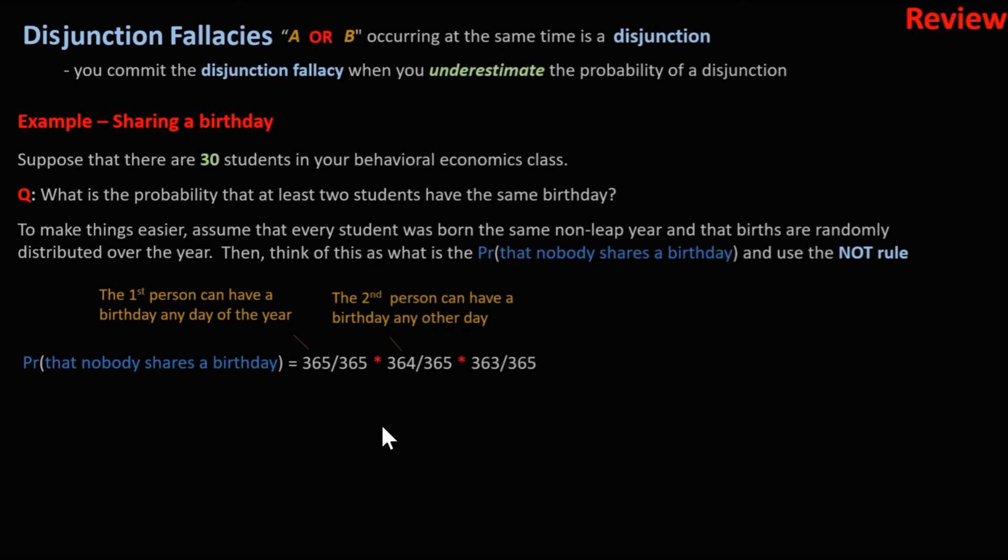they could be born on 363 days, those are the remaining days they could be born on so they don't share a birthday with the first two. We can continue this process. The probability that nobody shares a birthday is 29.4%.